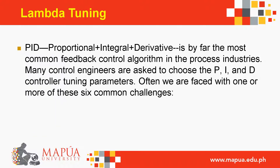PID — proportional plus integral plus derivative — is by far the most common feedback control algorithm in the process industries. Many control engineers are asked to choose the P, I, and D controller tuning parameters. Often we are faced with one or more of six common challenges.